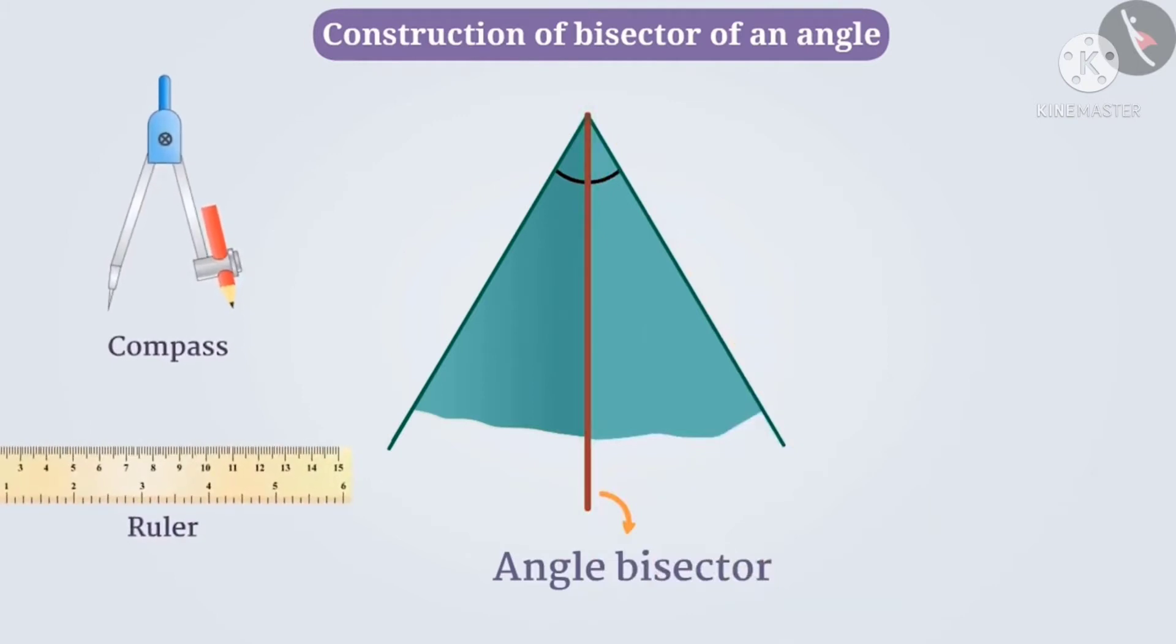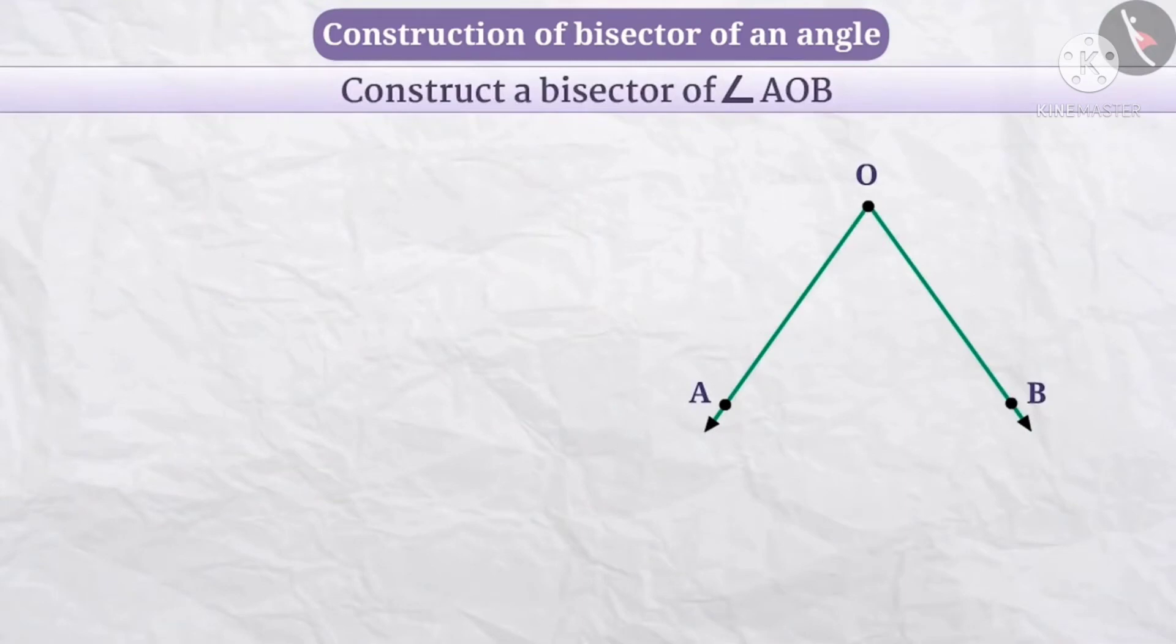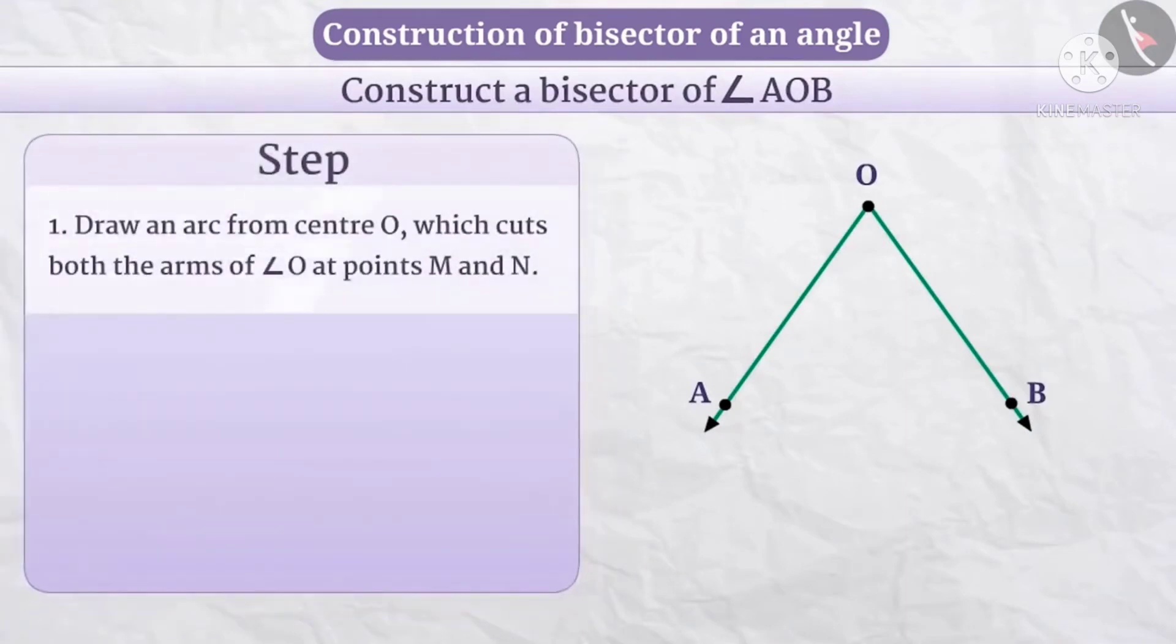We imagine this piece of paper is an angle. We can draw an angle bisector using compass and ruler. Here we draw one angle and construct an angle bisector. Here angle AOB...